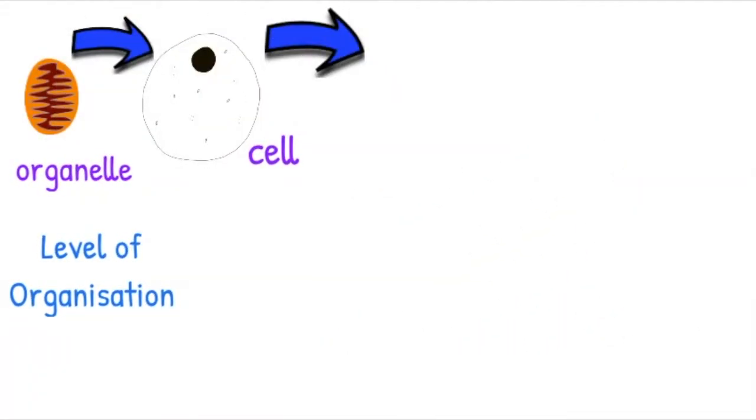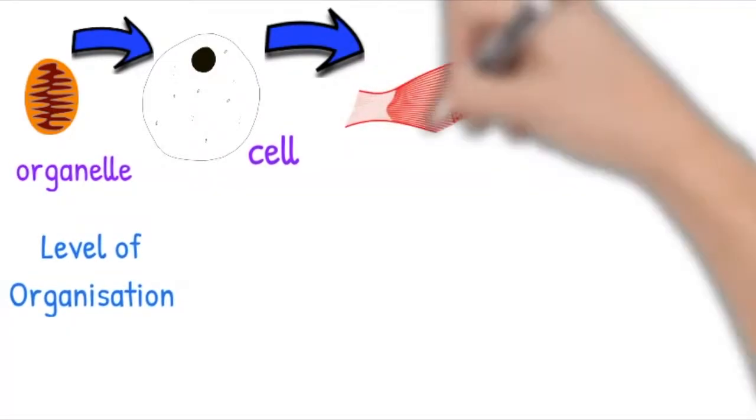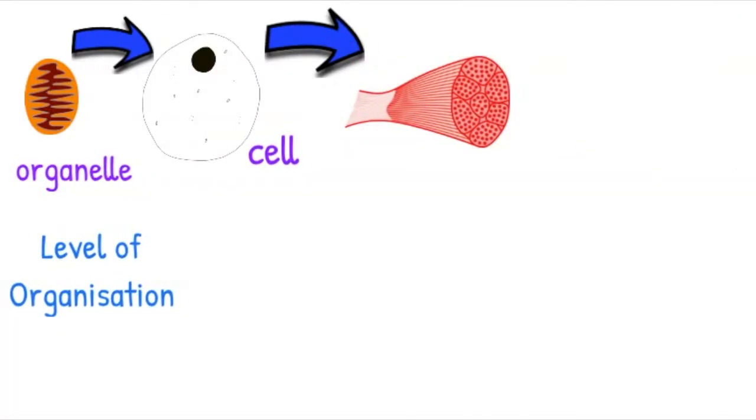Similar cells working together to carry out a particular function are called tissues. The example here is muscle tissue.